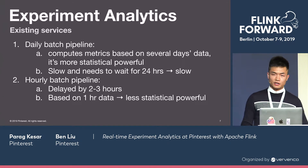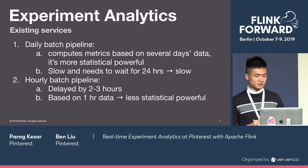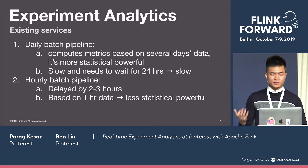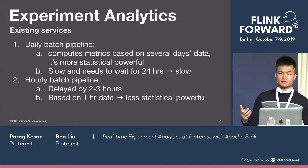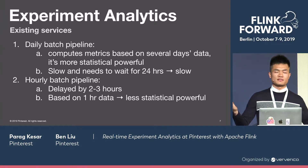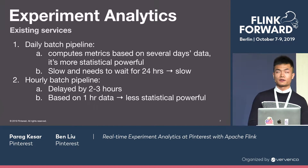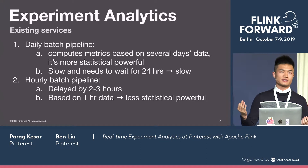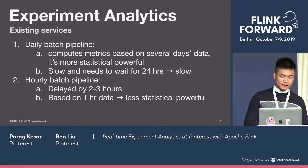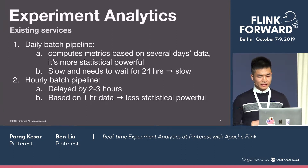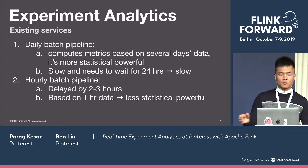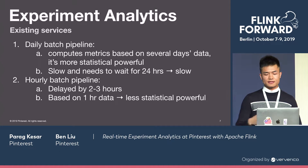Before setting up the Flink pipelines, we mainly relied on two existing experiment analytics services. One is our daily batch pipeline in Spark, which runs in an ad-hoc fashion and computes metrics based on several days' data. It's more statistically powerful, but it's slow — once you launch an experiment, you need to wait up to 24 hours to see the first results, so you can't catch failures quickly. The other is an hourly batch pipeline, which is also a batch job but is typically delayed by two to three hours, and based on only one hour of data, making it less statistically powerful.